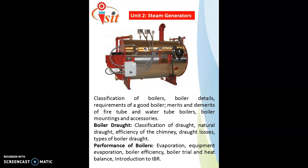The second half of unit 2 is categorized into two parts: boiler draught and performance. Boiler draught includes classification of draught, natural draught, efficiency of the chimney, draught losses, and types of boiler draught. Draught is the passage through which combustible gases from the boiler are exhausted to the atmosphere via the chimney. Boiler performance includes evaporation, equivalent evaporation, boiler efficiency, boiler trial, heat balance sheet, and introduction to IBR.